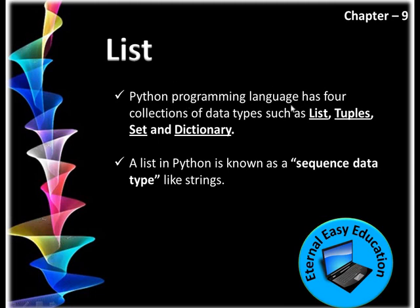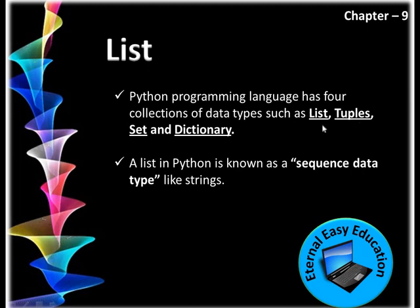Python programming language has four collection data types: list, tuples, set, and dictionary. A data type represents the type of the data. A Python program is able to handle many types of data — it can be an integer, float, or string. Likewise, Python introduces four types: list, tuples, set, and dictionary. In Chapter 9, you are going to learn how to create, modify, and delete all four data types.